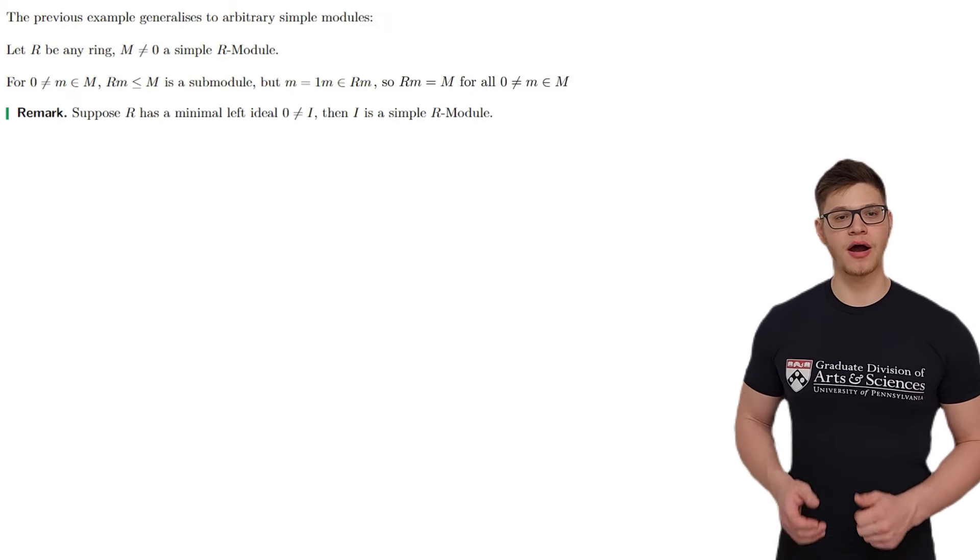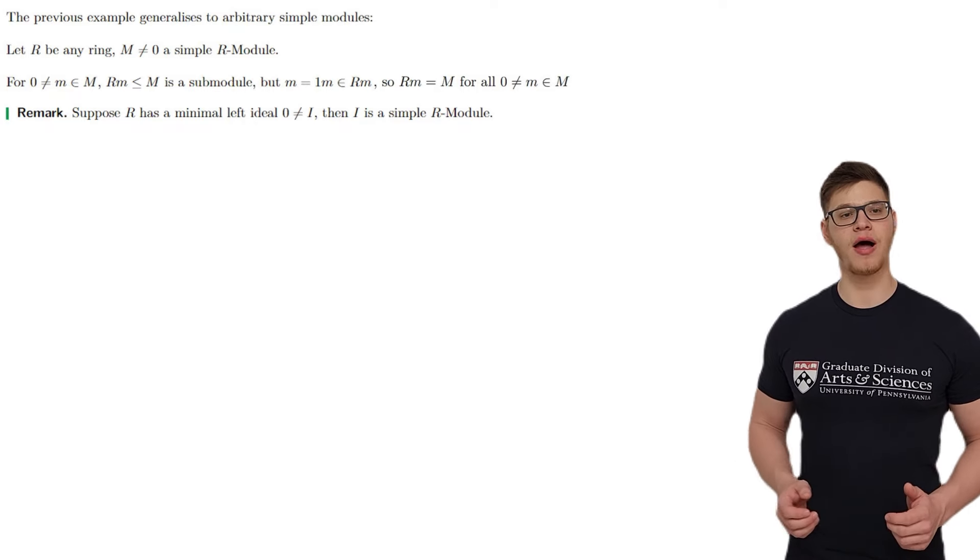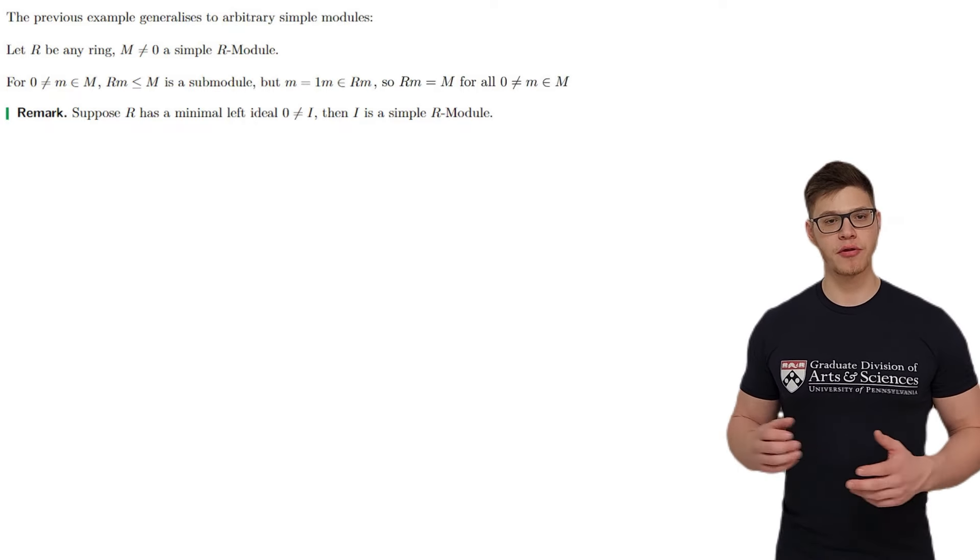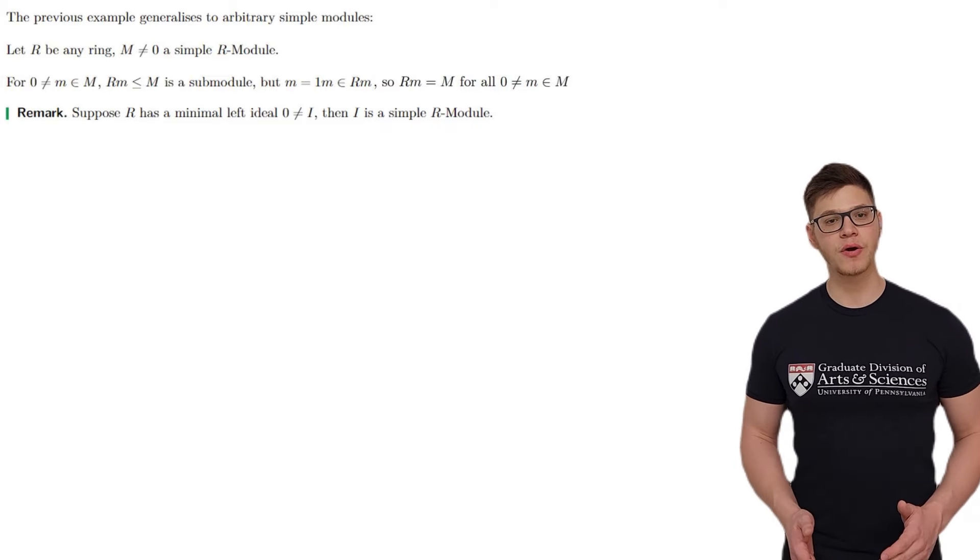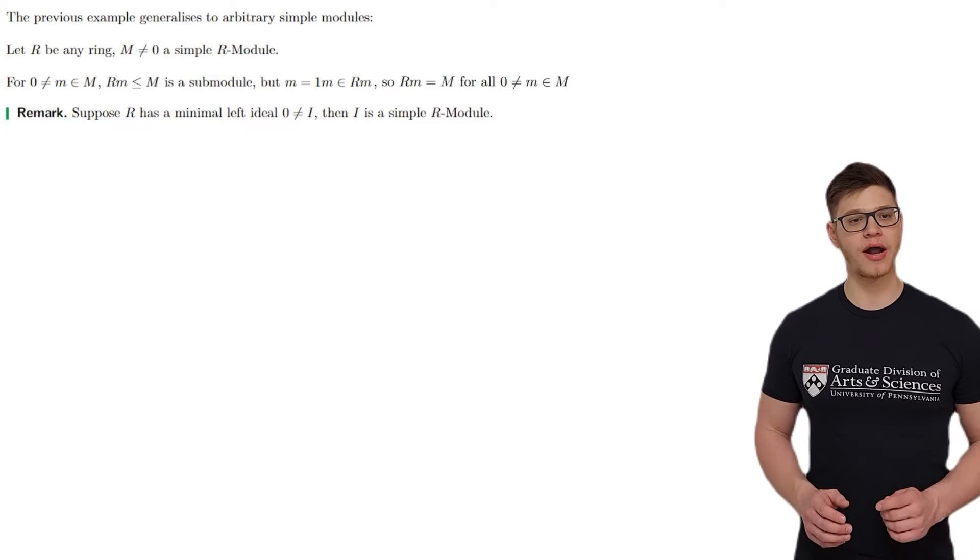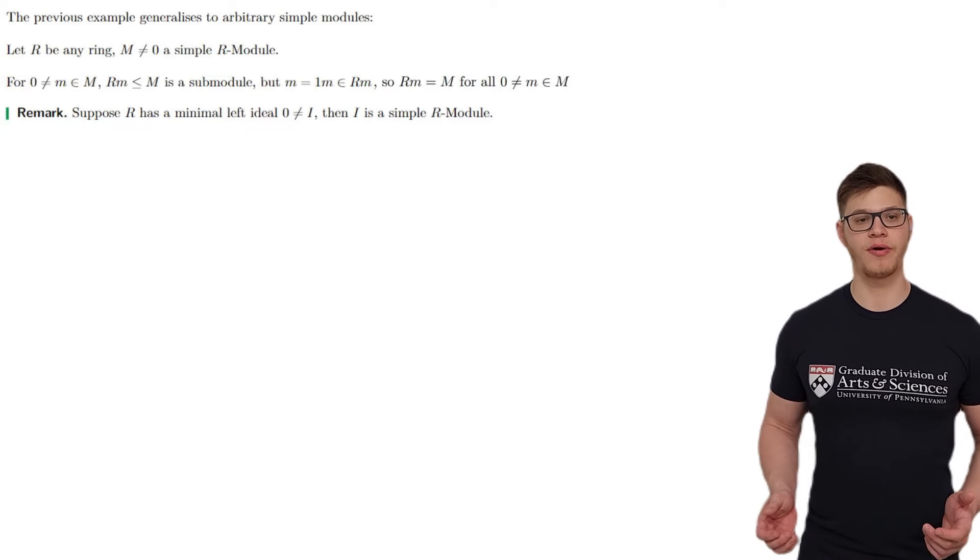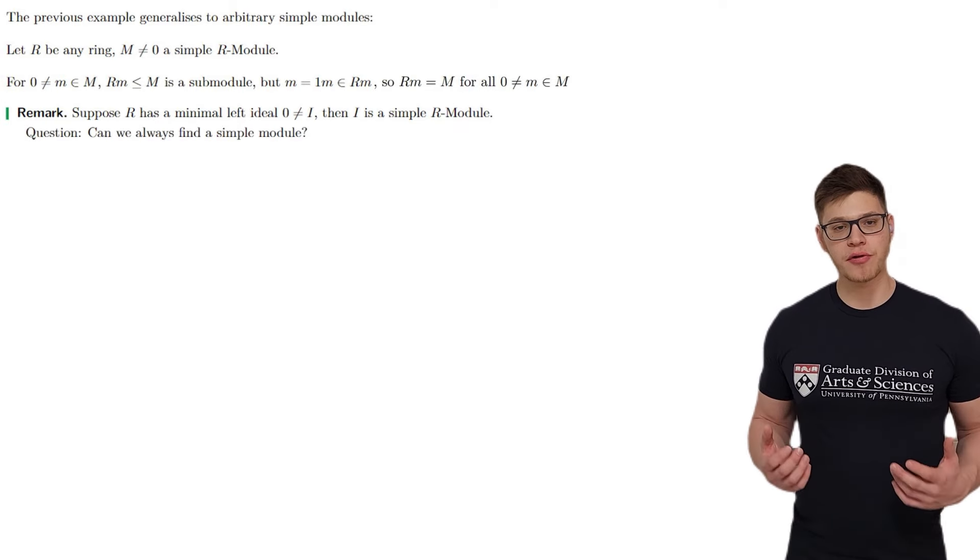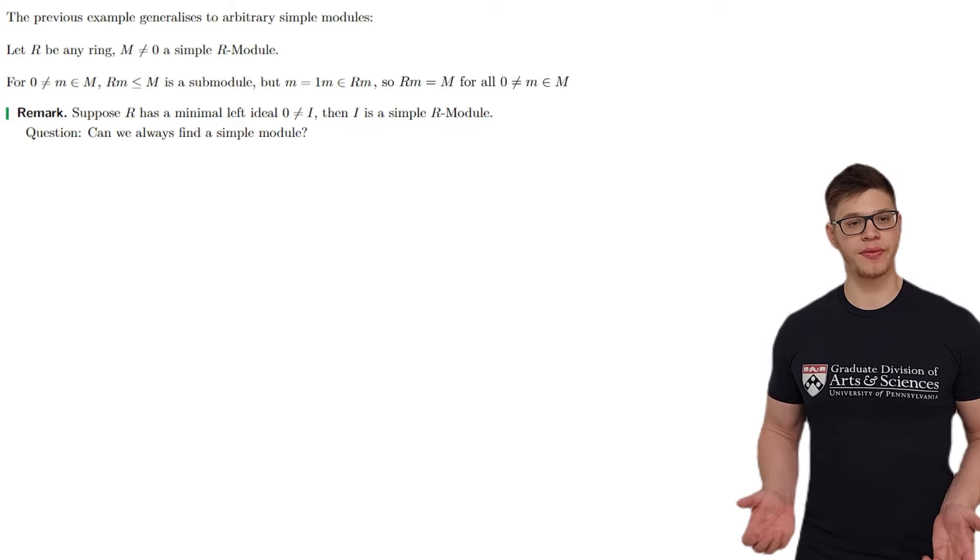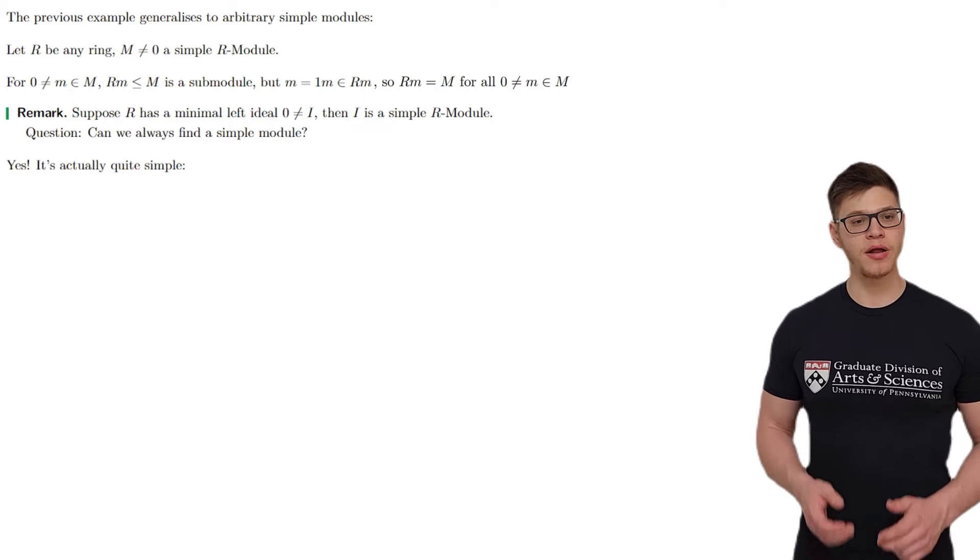As a remark, suppose that R has a minimal left ideal I, then I is a simple R-module. This method of constructing simple modules will be important later, when we discuss Wedderburn-Artin theory, but note that this only works if R has a minimal left ideal, which is not true for a general ring. The natural question to ask then is, does every ring have a simple module? And the answer turns out to be yes, and it is actually quite simple to construct them.